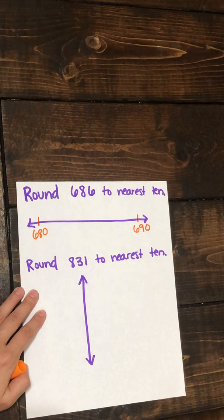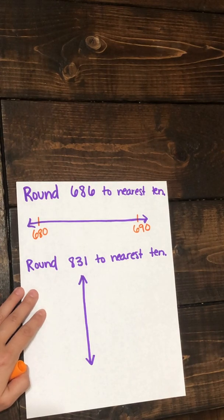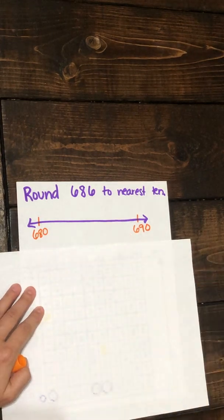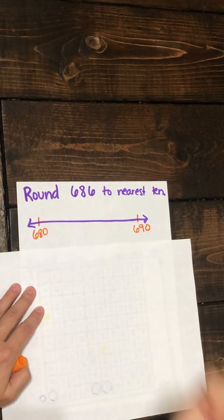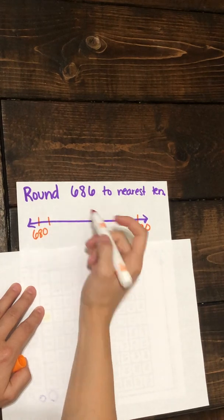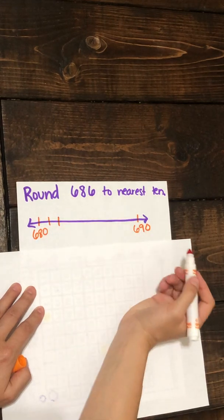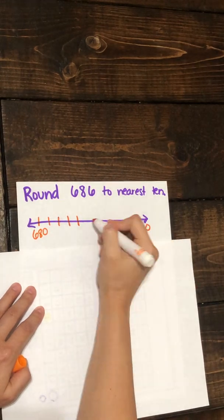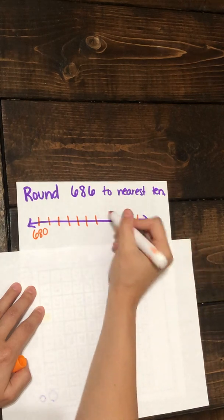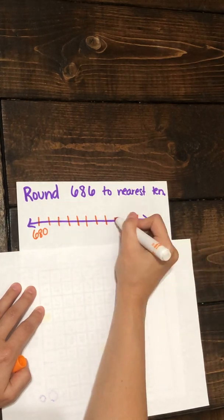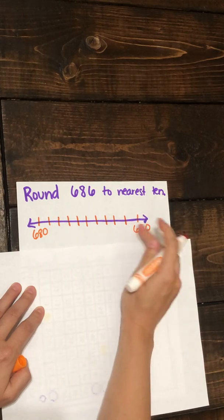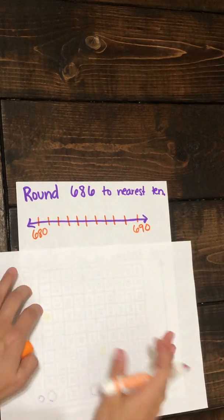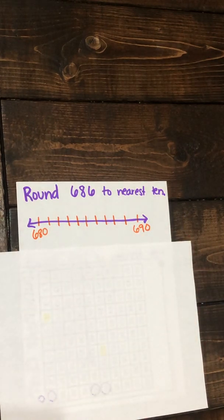This number line is going to be our vertical number line. Now let's fill in the numbers in between: 681, 682, 683, 684, 685, 686, 687, 688, 689, and 690. So let's plot 686 on our number line.